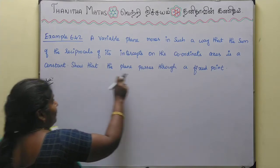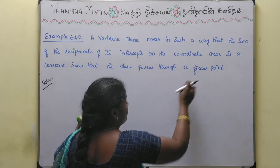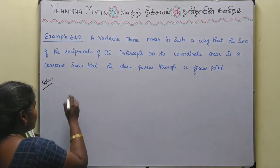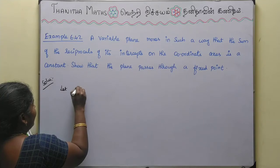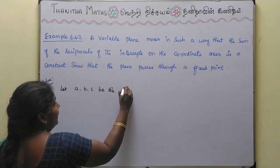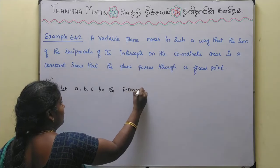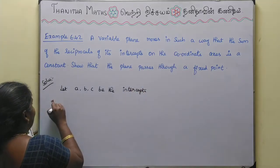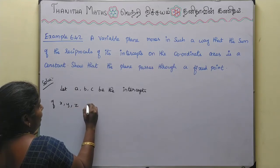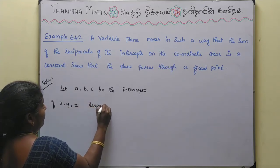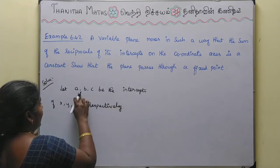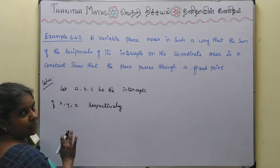The plane passes through a particular fixed point. Let a, b, c be the intercepts on x, y, z respectively. So x-intercept is A, y-intercept is B, and z-intercept is C.